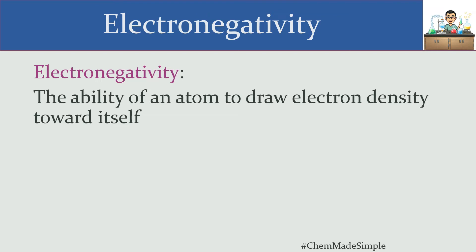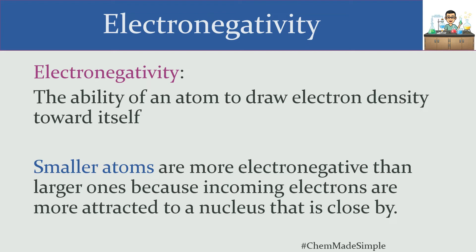One of the big things that determines electronegativity is the size of the atom. Smaller atoms are more electronegative than larger ones because incoming electrons are more attracted to a nucleus that is closer by. The only attractive thing about an atom is however many protons are in the nucleus and how close you can get to it. Everything else inside the atom is electrons, and electrons repel each other. In a smaller atom, you get to be a lot closer to the nucleus, so smaller atoms are a lot more capable of attracting electron density.